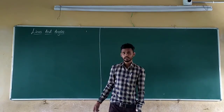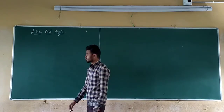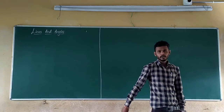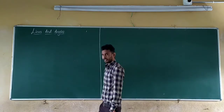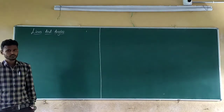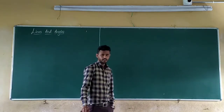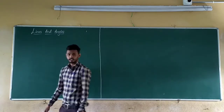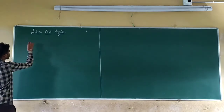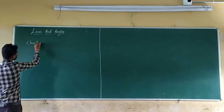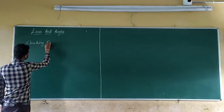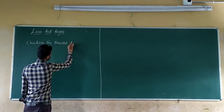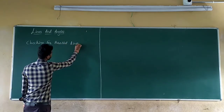Hello dear friends, welcome to the mathematics class. Here we are going to cover the chapter on lines and angles. In the previous class, you studied about corresponding angles, alternate interior angles, angles on the same side of the transversal, exterior angles, and interior angles. Now let us start the next section of this chapter: checking for parallel lines.